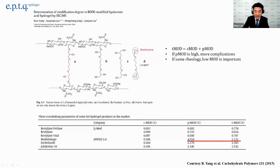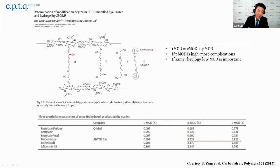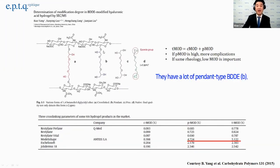So what does it mean? For example, if TMOD is 5, then PMOD is 4.7 — meaning they have very little of the cross-linked form and very, very much of the pendant type. They have lots of pendant type.